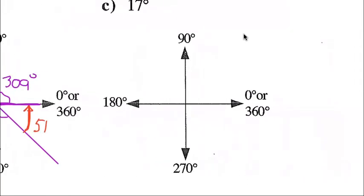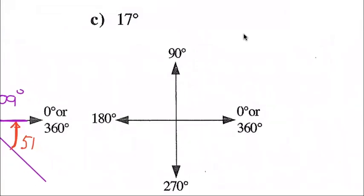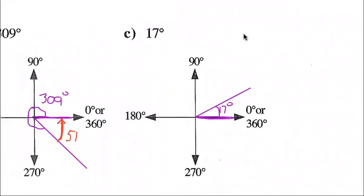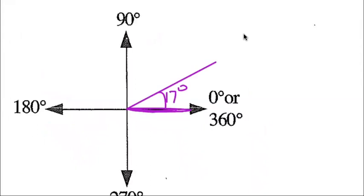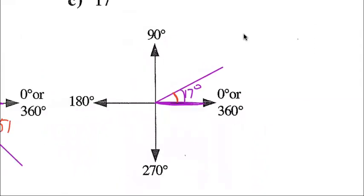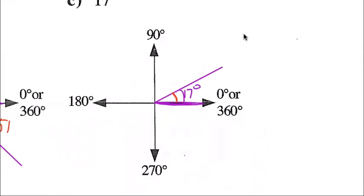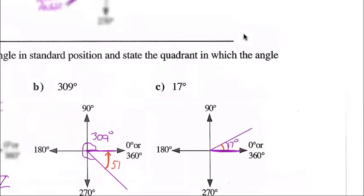Question C: a rotation angle of 17 degrees. So 17 degrees is just going to start here, go up a little bit, and terminate there. Label that 17 degrees. In quadrant one, the reference angle is equal to the rotation angle — so the reference angle is also 17 degrees.